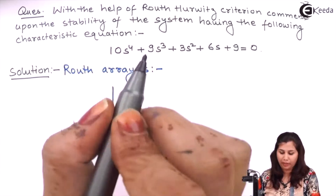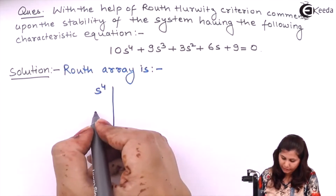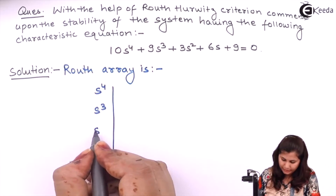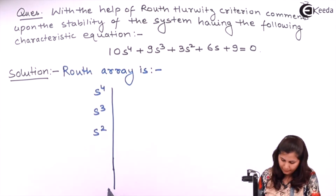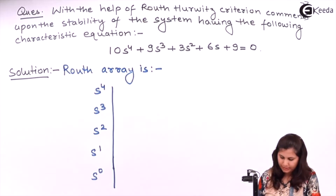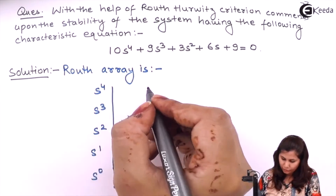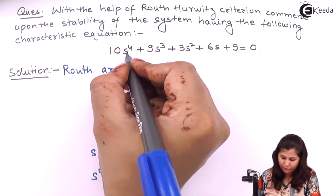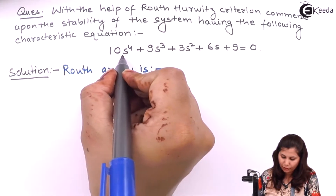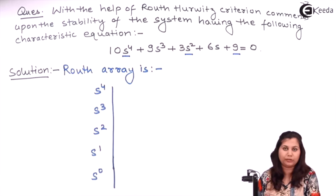It is an even power. So write here s to the power 4, then s³, then s², then s¹, and then s⁰. Then we write the coefficients. For the first row we will have even powers, so we write the coefficients of s⁴, s², and s⁰.